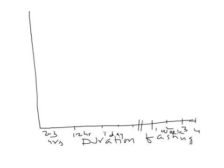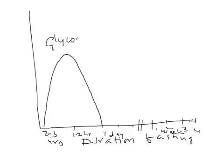Initially, from two to three hours of fasting up to 24 hours, the first thing that breaks down is glycogen. Glycogen degradation starts at two to three hours of fasting, rises, and peaks at 12 hours — meaning glycogen degradation is at peak level at 12 hours of fasting — and then it is completely depleted by 24 hours.